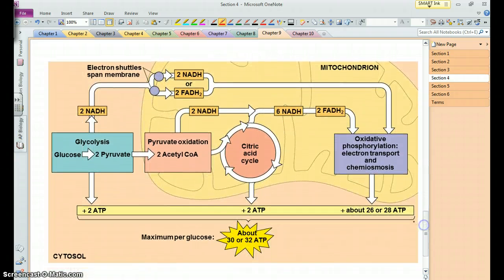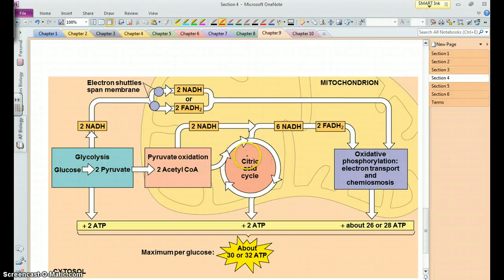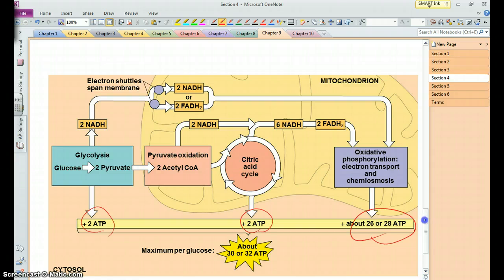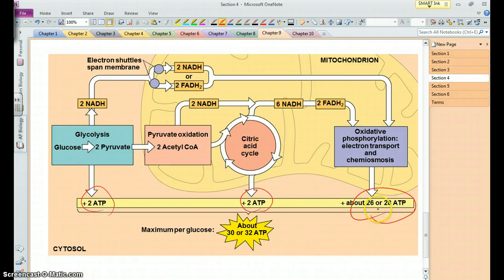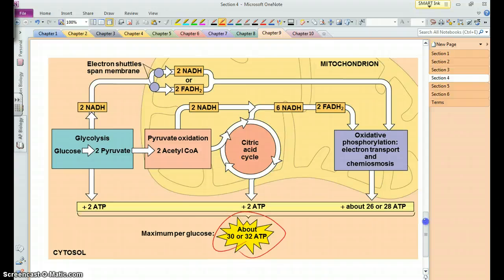So here we are. We have completed the oxidation of glucose. We've generated a little bit of ATP here, a little bit here, and some electron carriers along the way. And using the energy from those electron carriers, we're generating a whole bunch of ATPs here. So it's in the electron transport chain and oxidative phosphorylation where we generate the vast majority of the ATP. You can see our grand total from cellular respiration is somewhere around 30 to 32 ATPs per glucose. We'll see how that compares to fermentation.